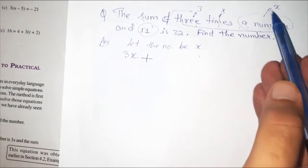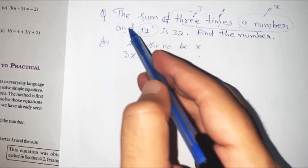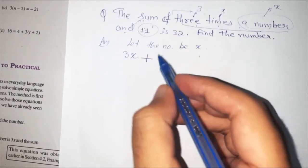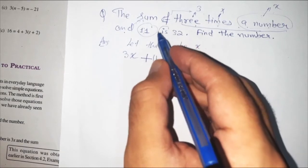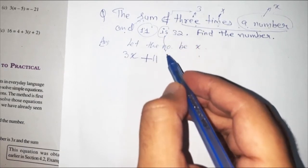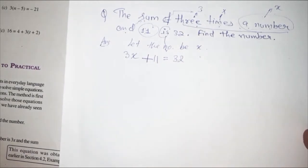3 times a number and 11. What was happening for 'and'? And it was sum. Sum 11. And 'is' means equals to. Equals to 32.